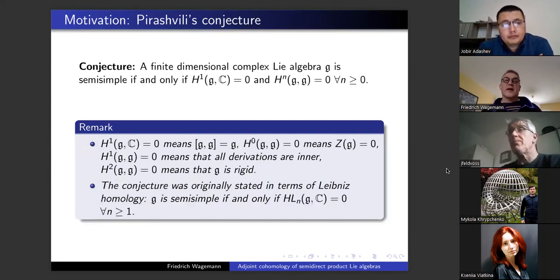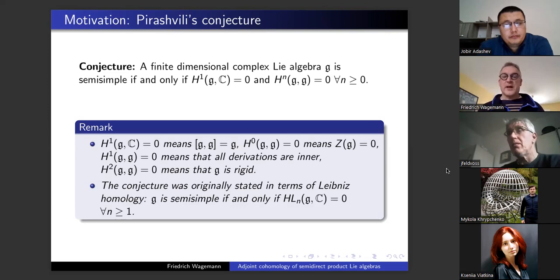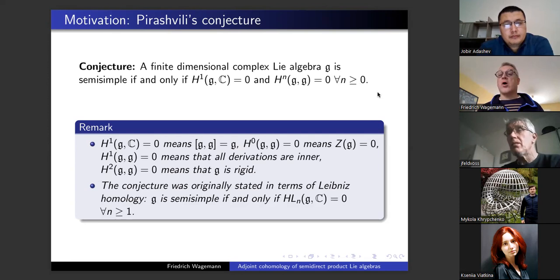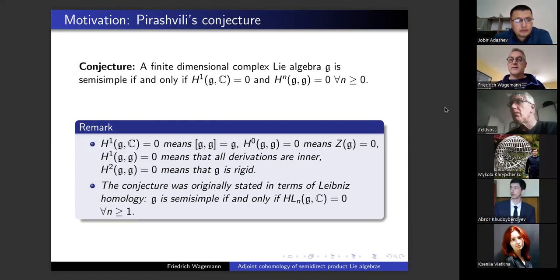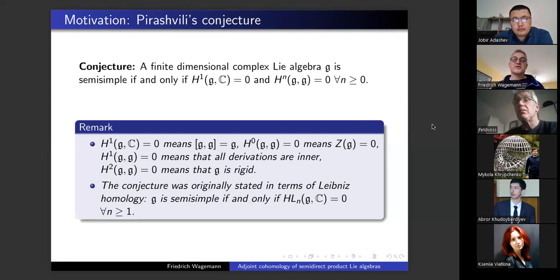Let me start with Pirashvili's conjecture. It is a conjecture about finite dimensional complex Lie algebras, and it states that a finite dimensional complex Lie algebra is semi-simple if and only if H1 with trivial coefficients is zero and all Hn with adjoint coefficients are zero. So it is a cohomological characterization of semi-simple Lie algebras — unfortunately conjectural for the moment.